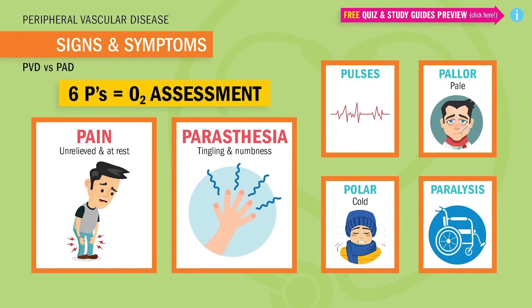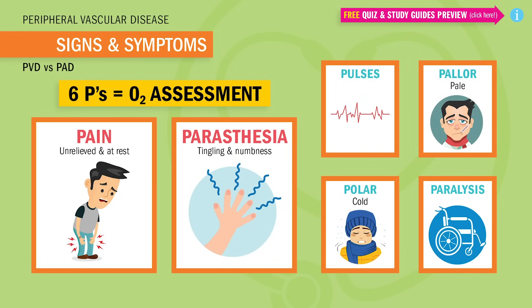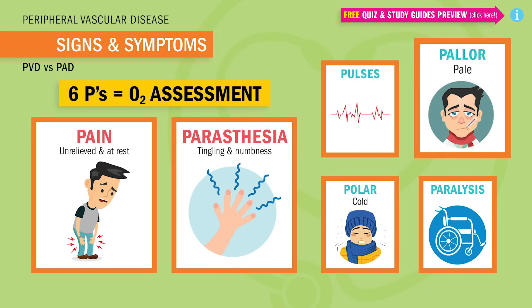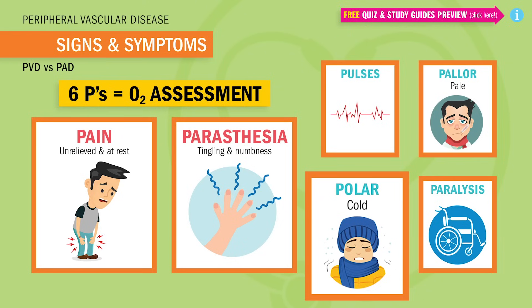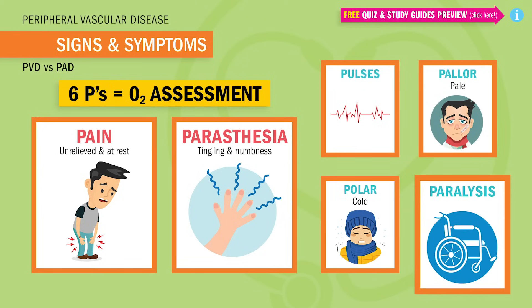Now the other four Ps we sort of expect to be there, so we don't really focus on them in terms of priority for tests. We already know pulses are going to be diminished or weak, especially in PAD. And pallor is just the paleness from that low blood flow — we use the word 'polar,' meaning the leg gets cold like a polar bear, since the leg lacks that warm blood flow. And lastly, paralysis — the inability to move the limb, like a paralyzed patient. Just think the limb is passed out from that lack of oxygen.